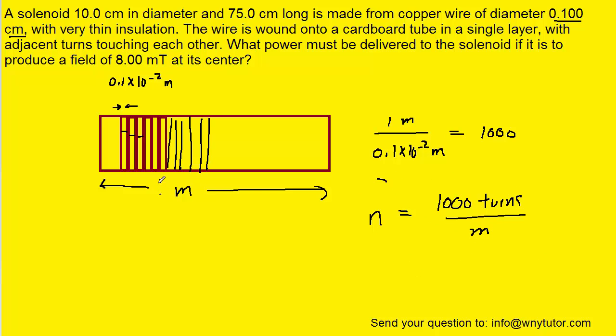Now of course the actual length of the cardboard tube was not one meter. It was actually 75 centimeters or .75 meters. So what we'll calculate next is the actual total number of turns of wire. And we do that by taking the number of turns per meter and multiplying it by the actual length of the solenoid. So we're going to take our 1,000 turns per meter and multiply it by the actual length of .75 meters.